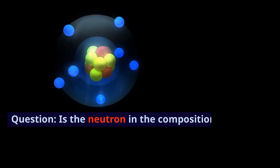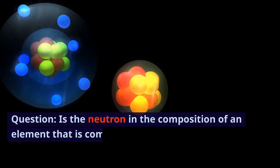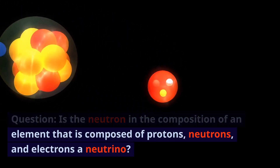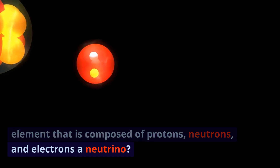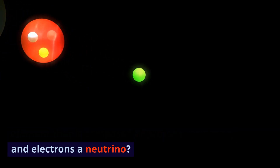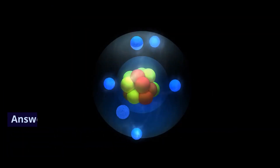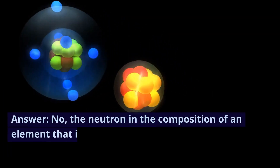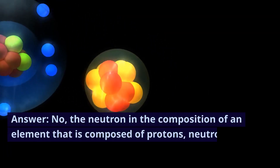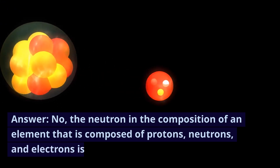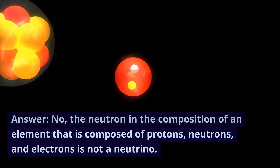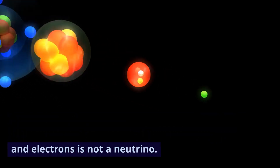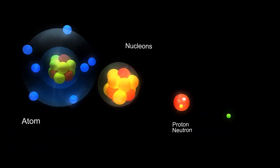Question: Is the neutron in the composition of an element that is composed of protons, neutrons, and electrons a neutrino? Answer: No, the neutron in the composition of an element that is composed of protons, neutrons, and electrons is not a neutrino.